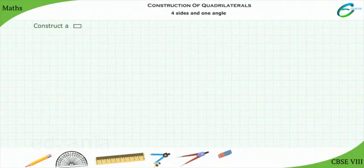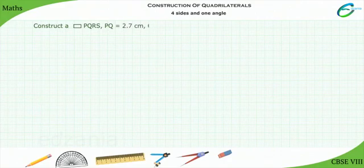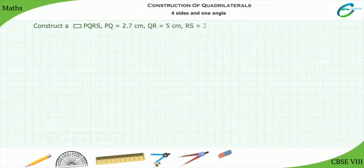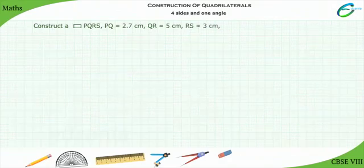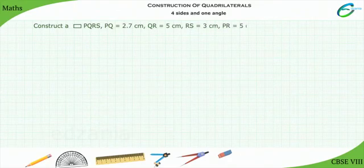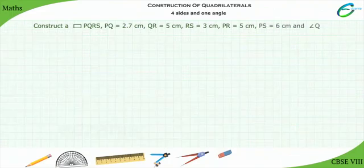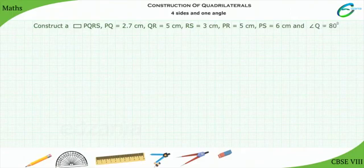Construct a quadrilateral PQRS where PQ equals 2.7 cm, QR equals 5 cm, RS equals 3 cm, PR equals 5 cm, PS equals 6 cm, and angle Q equals 80 degrees.